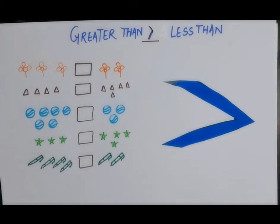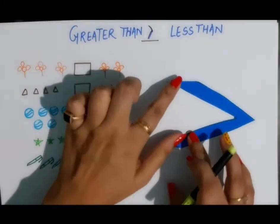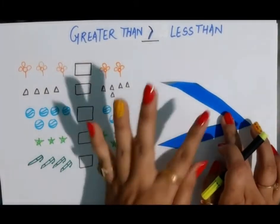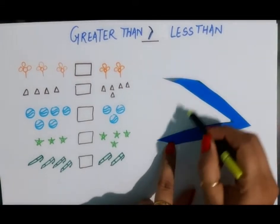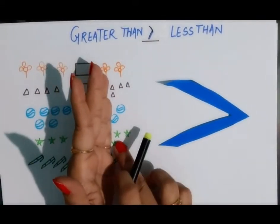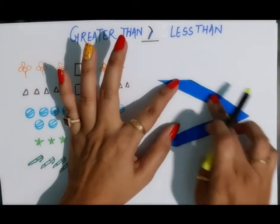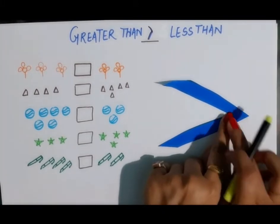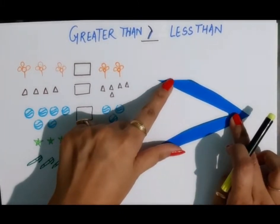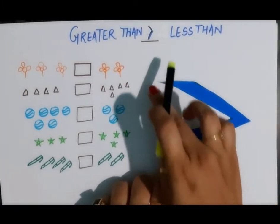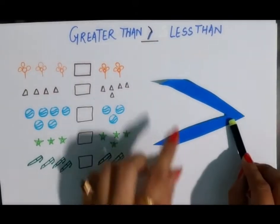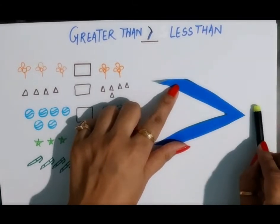For this we use a sign — this is the sign of greater than and smaller than. The side which is open is the greater side, and the side which is closed is the smaller. Listen to me very carefully: the side which is open is the greater sign, and the closed one is the smaller.